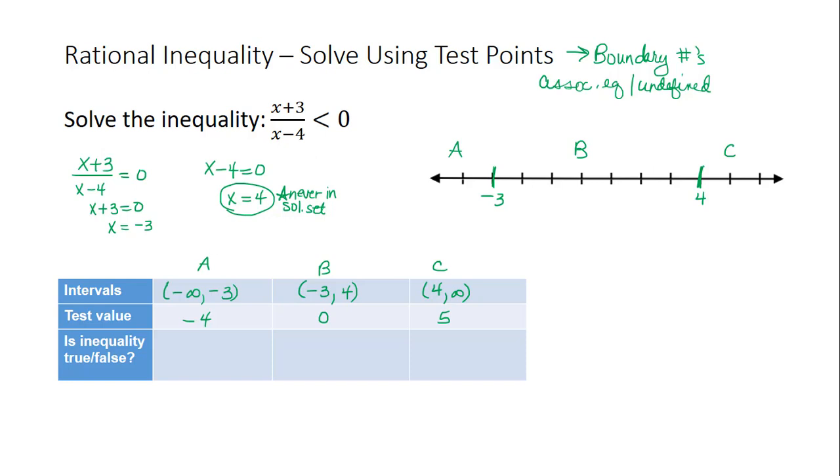Recall here we substitute those test values into the original inequality to see if it's true or false. When I replace x with negative 4, I get negative 4 plus 3 divided by the expression negative 4 minus 4, and I want to see is that less than 0. This becomes negative 1 divided by negative 8, which is 1 eighth, which is a positive number which is not less than 0. So that is false.